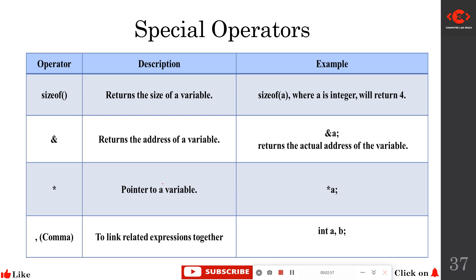Next, we will look at special operators. Special operators are useful for certain special functions. They include the sizeof operator, the ampersand or address operator, the asterisk symbol — also called the indirection or dereference operator — and the comma operator.